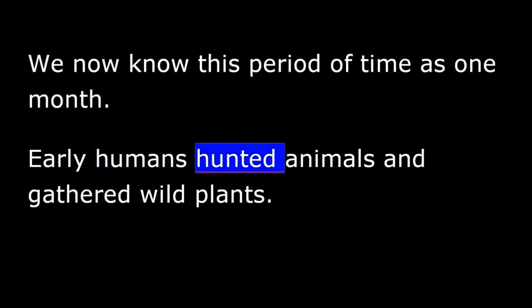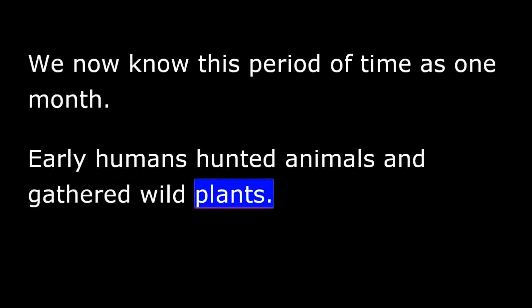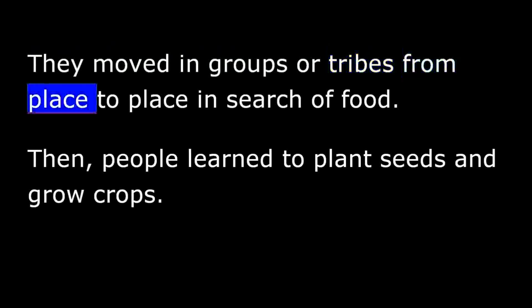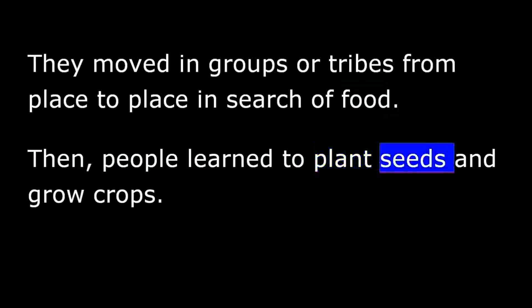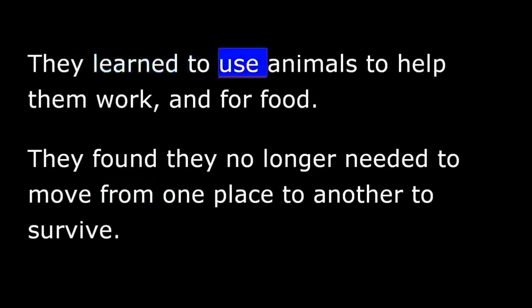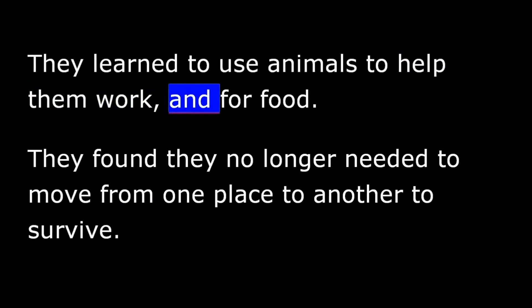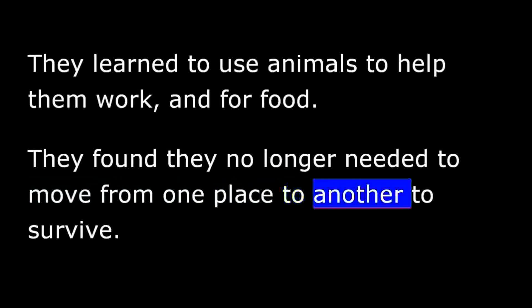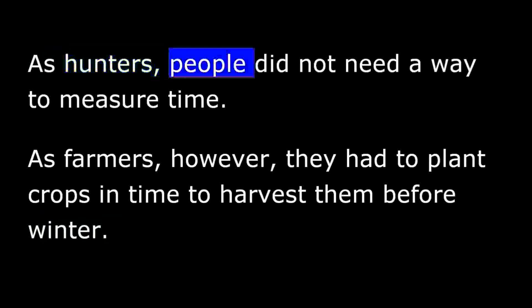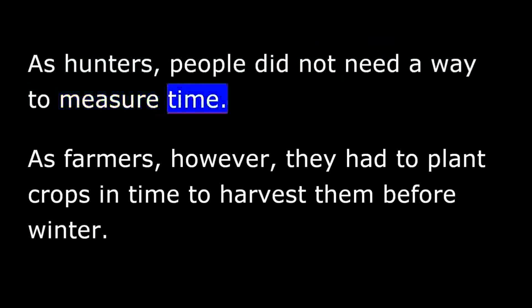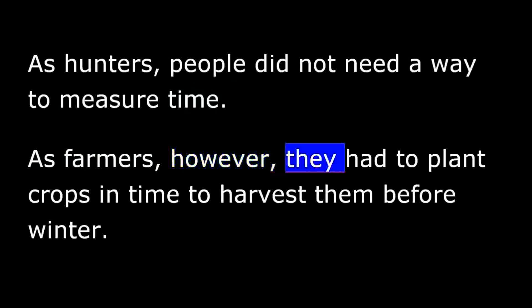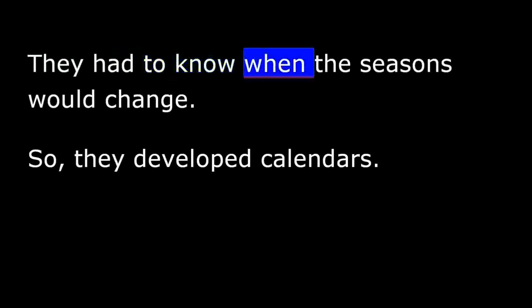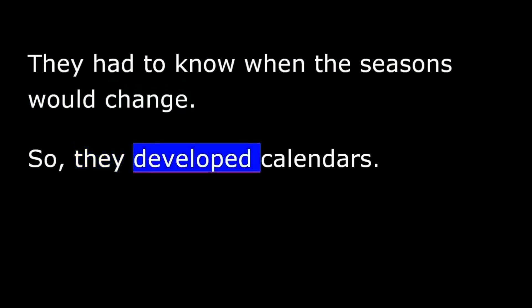Early humans hunted animals and gathered wild plants. They moved in groups or tribes from place to place in search of food. Then people learned to plant seeds and grow crops. They learned to use animals to help them work and for food. They found they no longer needed to move from one place to another to survive. As hunters, people did not need a way to measure time. As farmers, however, they had to plant crops in time to harvest them before winter. They had to know when the seasons would change. So they developed calendars.